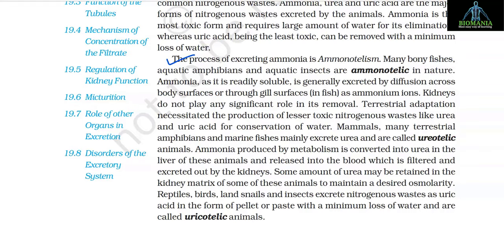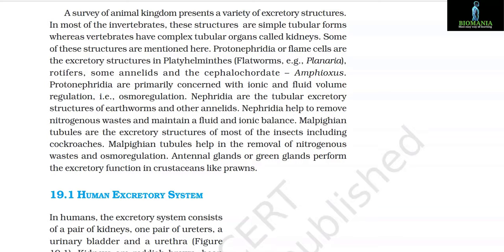Some amount of urea may be retained in the kidney matrix of some of these animals to maintain a desired osmolarity. Reptiles, birds, land snails, and insects excrete nitrogenous waste as uric acid in the form of pellet or paste with minimum loss of water and are called uricotelic animals.